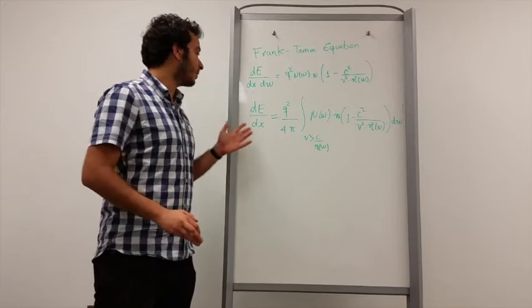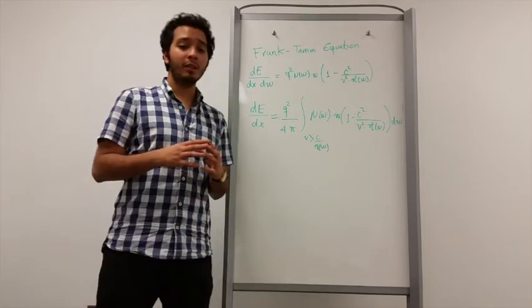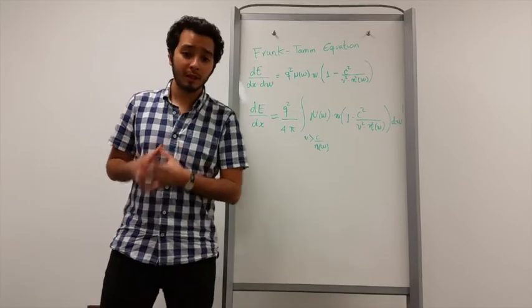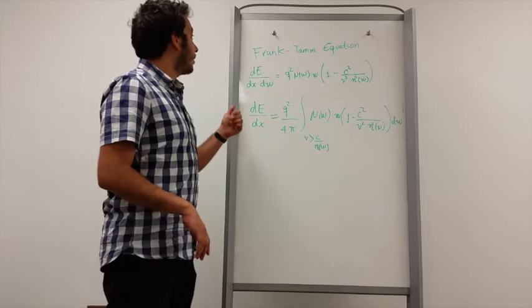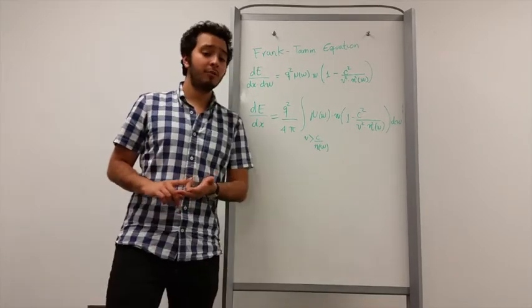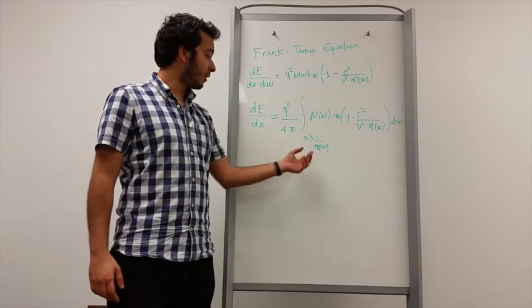This equation describes the total energy of the Cherenkov radiation. This integral is done over the frequencies for which the particle speed is greater than the speed of light in that medium. Frank, Tamm, and Cherenkov got the Nobel Prize in 1958 for this equation, and this integral converts into this image.